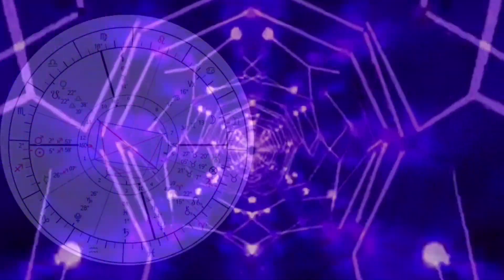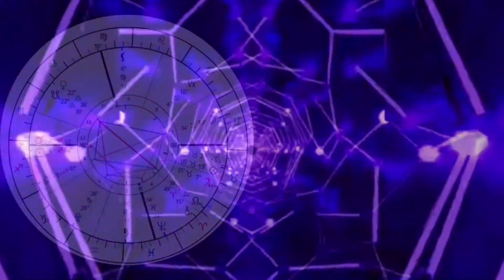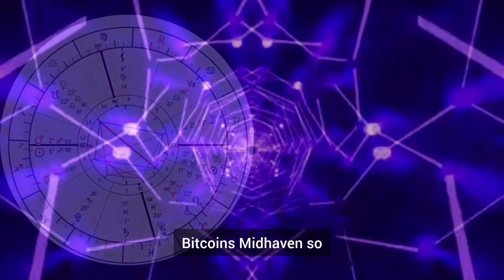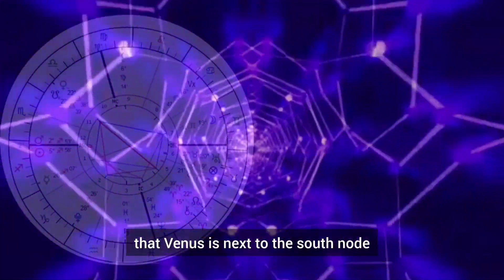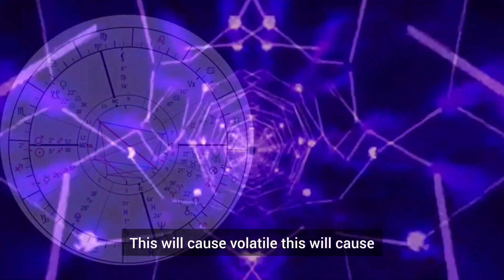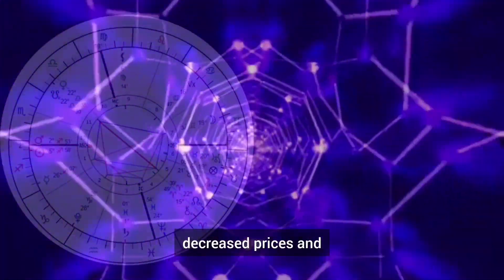This is difficult energy because Venus rules Bitcoin's mid-heaven, so that also means Venus is next to the south node. This will cause volatile, decreased prices.